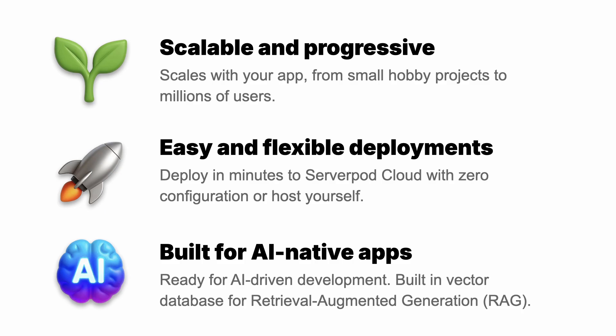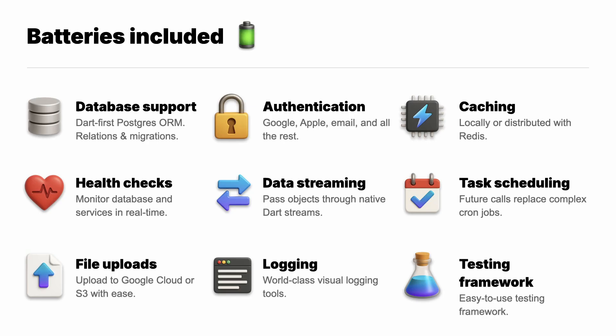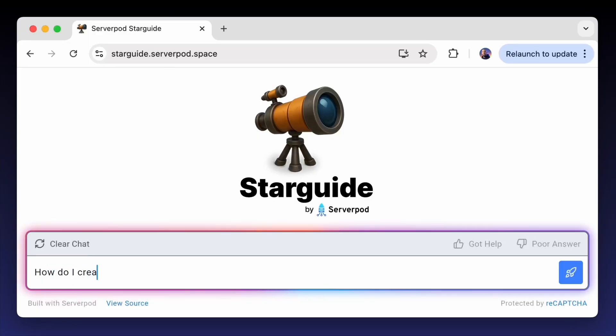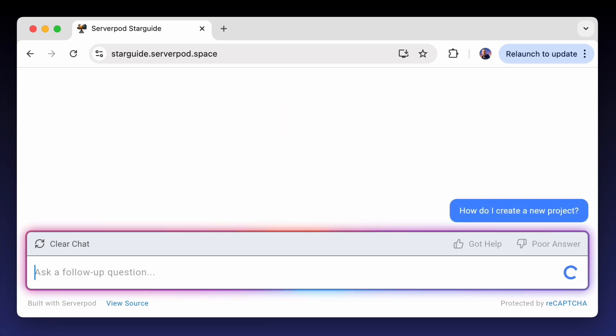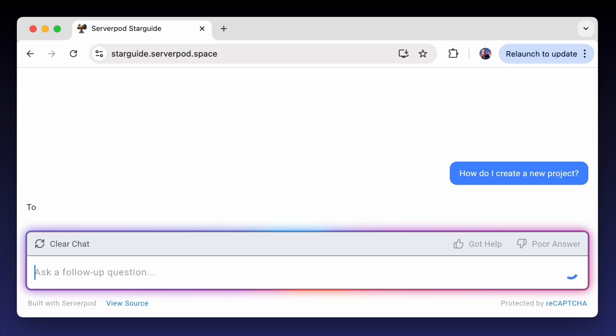ServerPod is scalable — great for hobby projects but can scale to handle millions of users. You can deploy to any server that can run Dart or Docker. We're building a ServerPod cloud for zero configuration deployments with auto scaling, load balancing, domain names and certificates. ServerPod is also built with AI-native apps in mind, with support for vector databases and retrieval augmented generation. And of course we made it great to use with code generation. ServerPod comes with batteries included: support for Postgres through its ORM with relations, joins and migrations, authentication, caching, health checks, logging, file uploads to S3 or Google Cloud, scheduling tasks with future calls and streaming data. It has a great testing framework for integration tests. To make it easier to learn ServerPod, we built StarGuide — StarGuide lets you chat with your documentation.